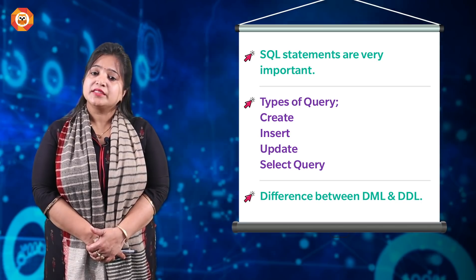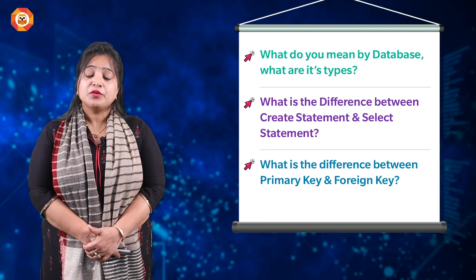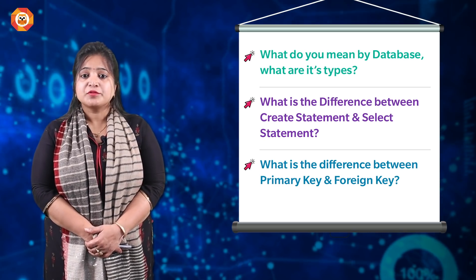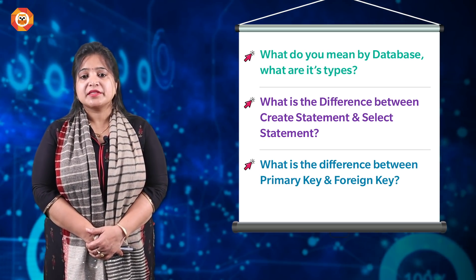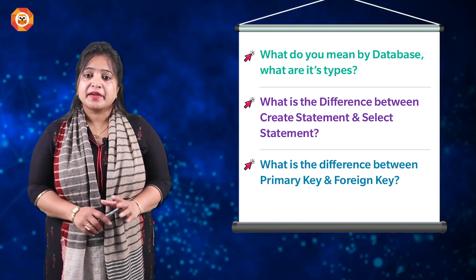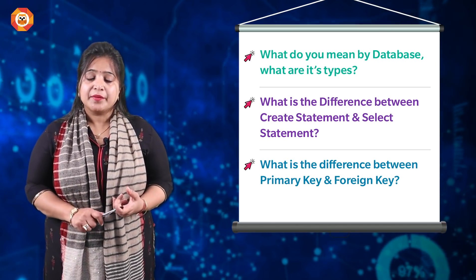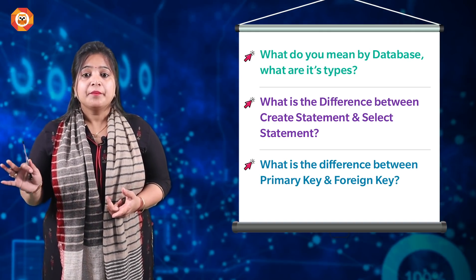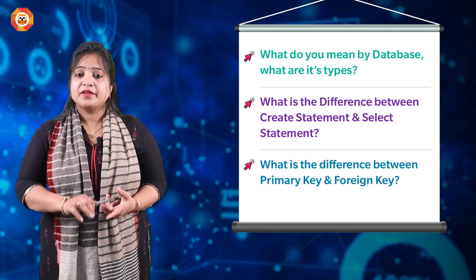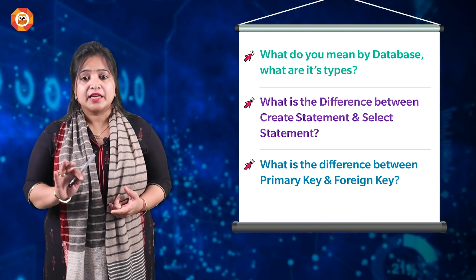For theoretical questions from the Database chapter: what is the difference between DML and DDL, what are the different kinds of keys, what is the difference between primary key and foreign key, what do you mean by a database, what are the different types of databases — flat database vs relational database with examples. Also study: DML has two parts — procedural and non-procedural. Learn what a database is, in which areas it is used, and what the two types of data types are.